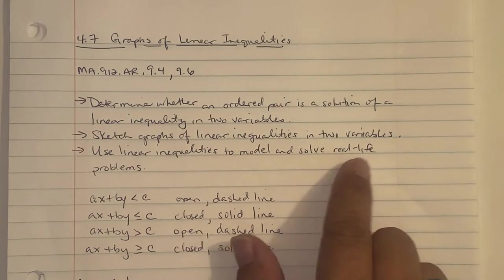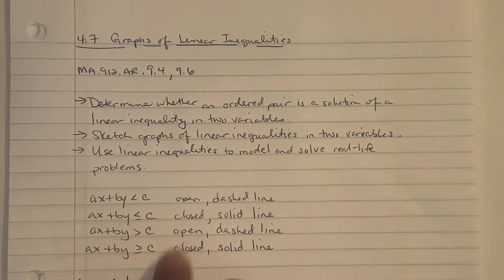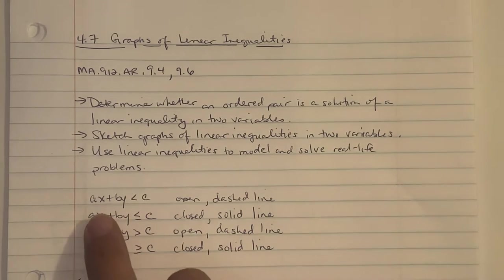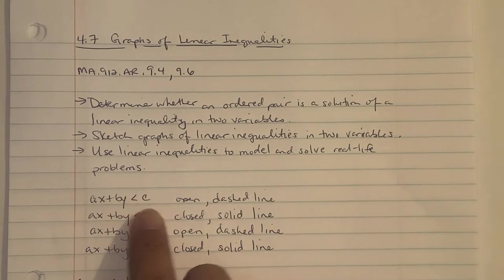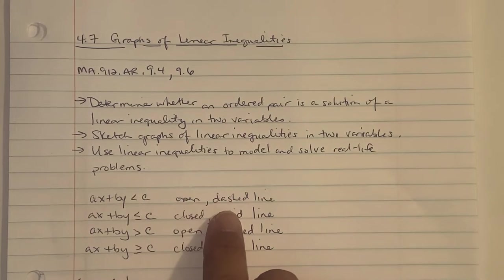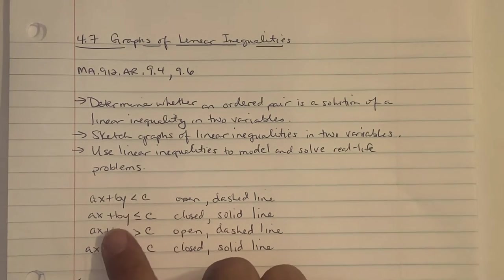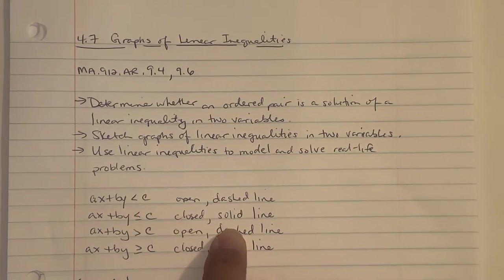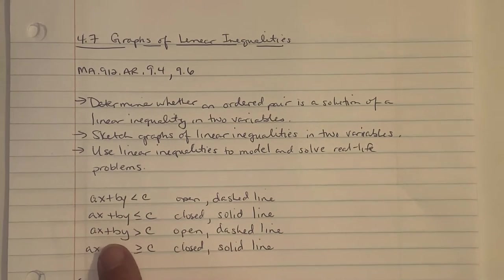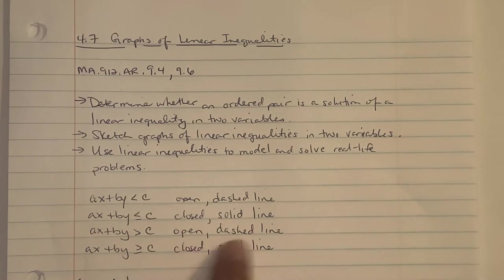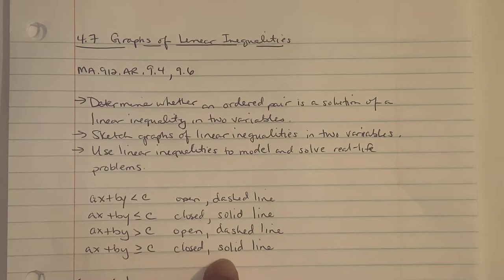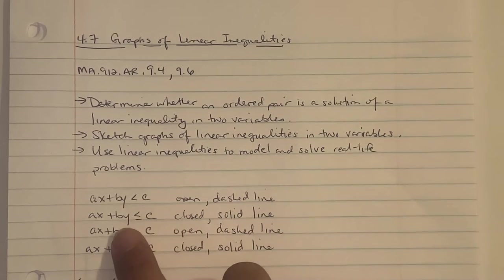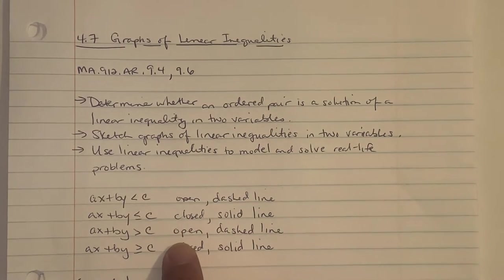Here's a refresher on inequality graphing. If you see AX plus BY less than C, it's called an open graph, so you would see dashed lines. If you see AX plus BY less than or equal to C, it's a closed graph, so you would have a solid line. AX plus BY greater than C is open with a dashed line. AX plus BY greater than or equal to C is closed with a solid line. Then depending on how they are evaluated using the origin point (0, 0), that determines if you shade above or below the line.